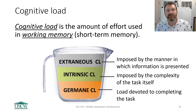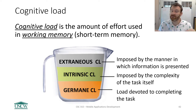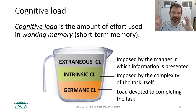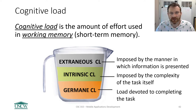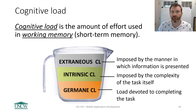First, we've got extraneous cognitive load, and this is the bad one. This cognitive load is imposed by the manner in which information is presented — and this is the thing you as a UI designer have the most control over. Humans have an upper limit to how much cognitive load they can tolerate. Once something is too hard to do mentally, you just can't do it. If I'm telling you a story in Japanese while you're doing a math problem and riding a bicycle all at once, you just can't do it. Extraneous cognitive load is imposed by the manner in which information is presented.